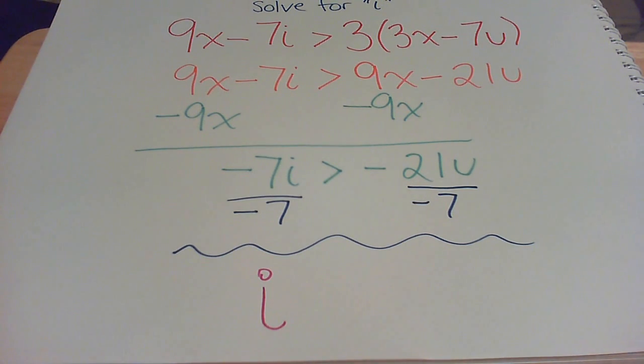21 divided by 7 would be 3. So 3 and then bring the u down. U.